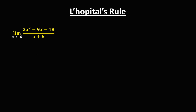To find the limit using L'Hôpital's rule, we need to find the derivative of the numerator and the derivative of the denominator. The derivative of 2x squared: multiply 2 times 2, that's 4, then x to the power 1. Plus the derivative of 9x, that's 9. And the derivative of a constant is 0.